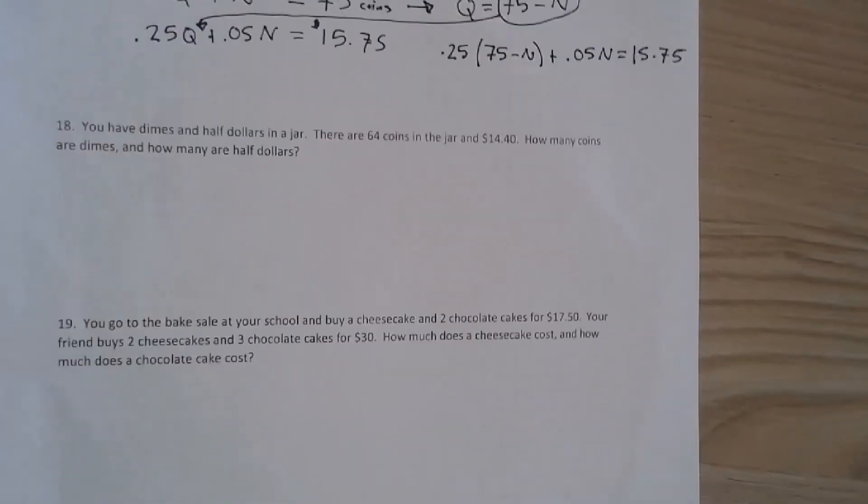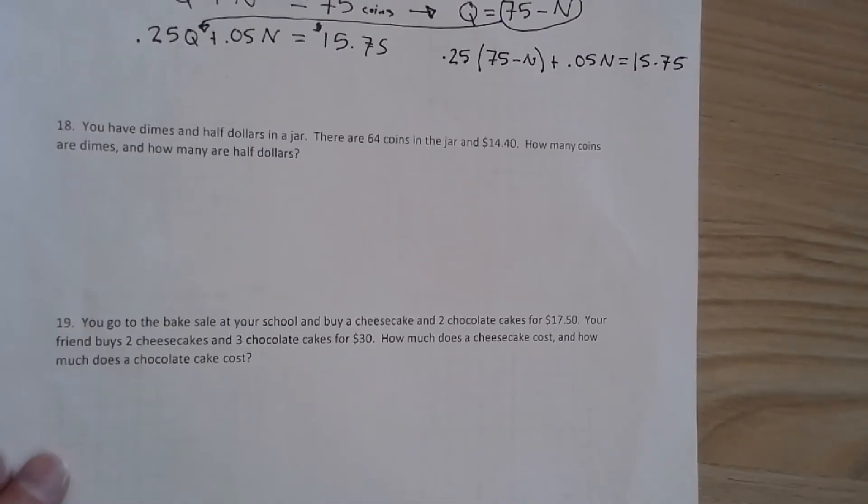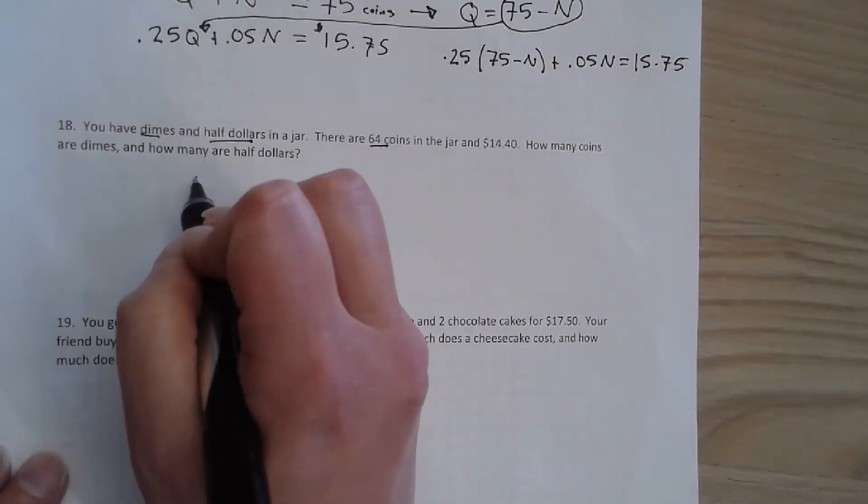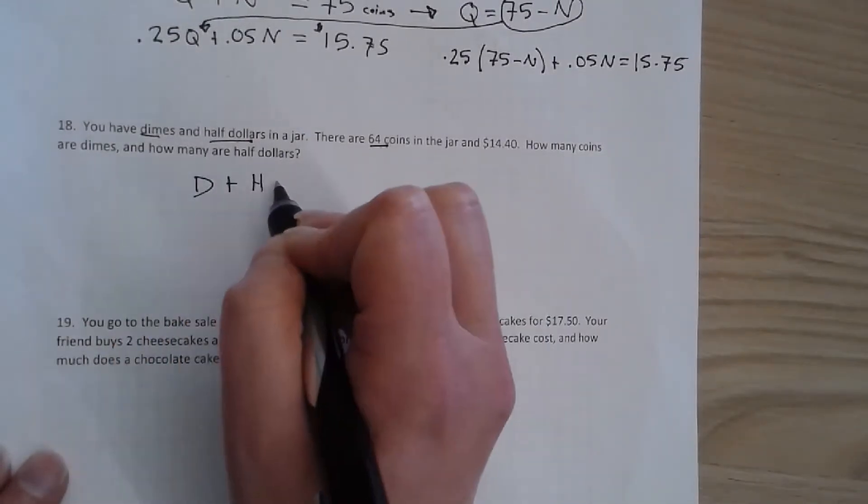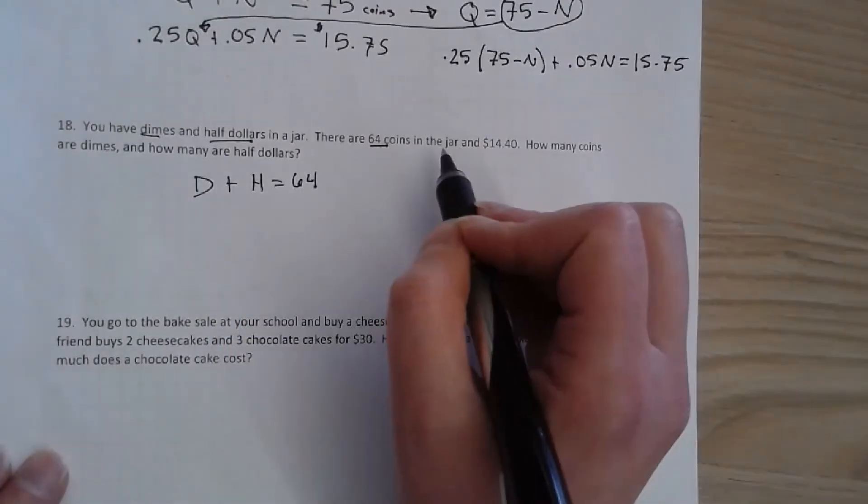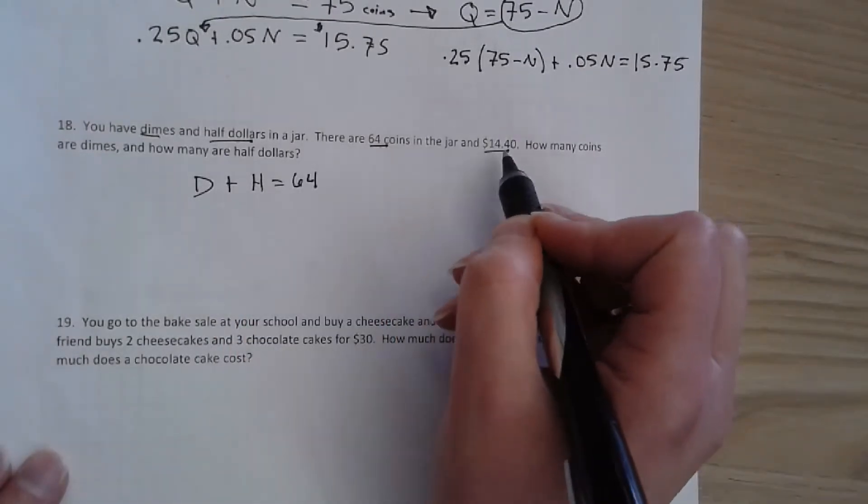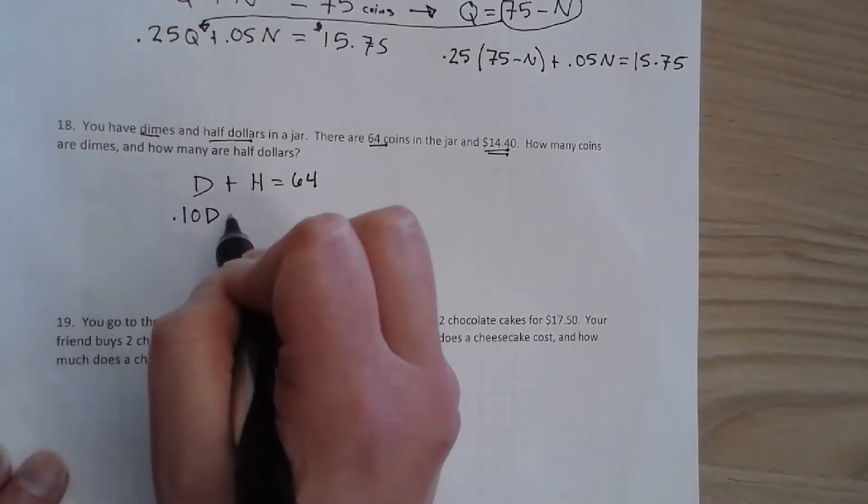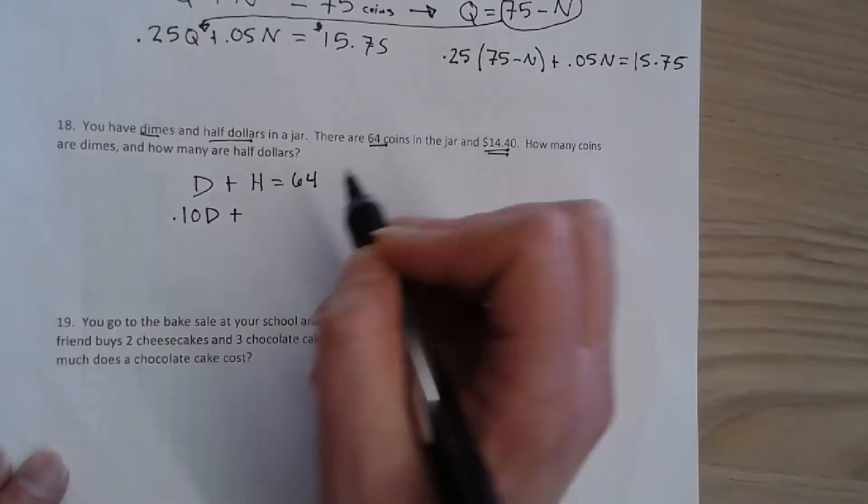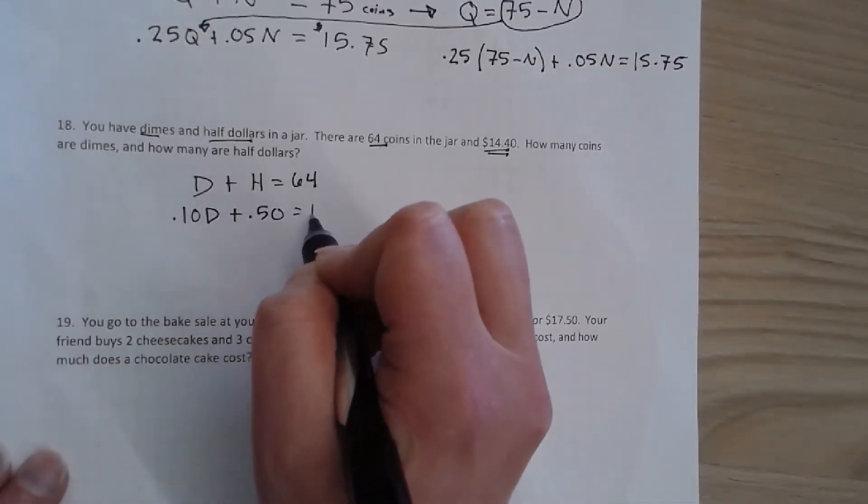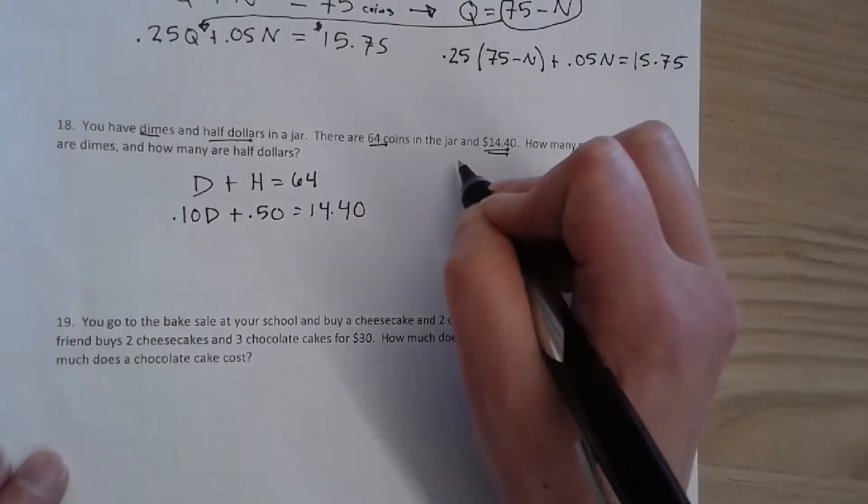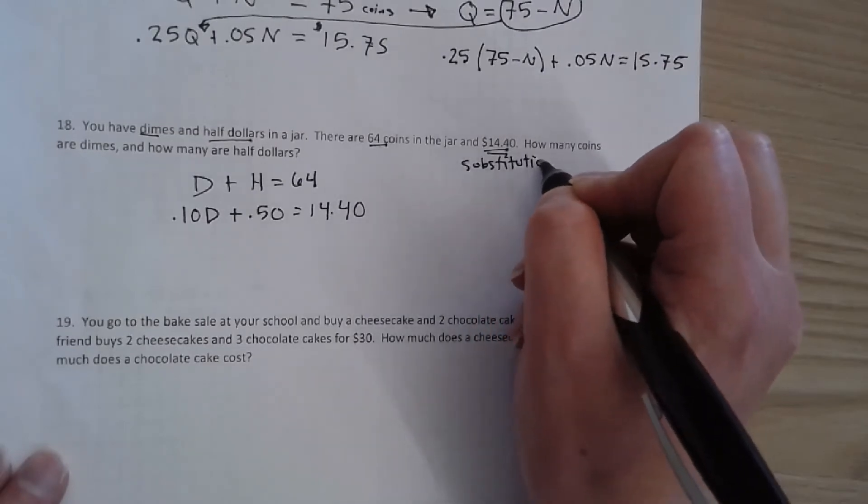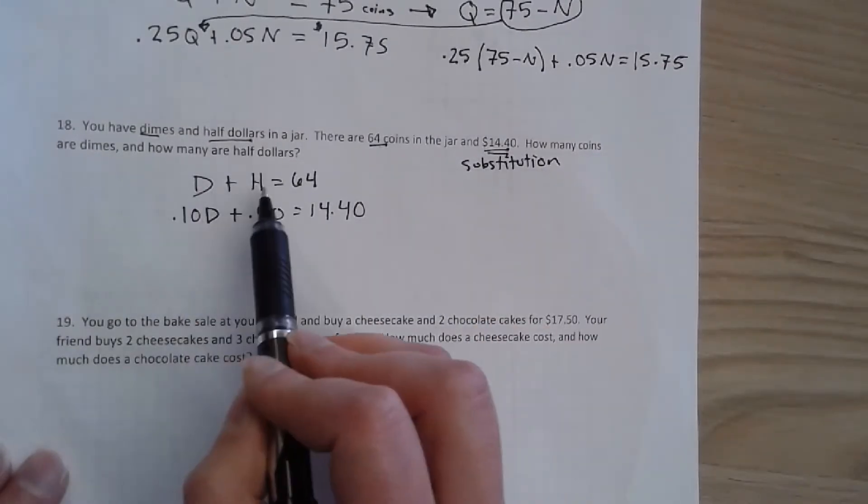On 18, I'll let you finish that. On 18 it's very similar. This time though we have dimes and half dollars with 64 coins. So dimes plus H for half dollars equals 64 coins. In the jar this time I have 14 dollars and 40 cents. So again dimes are 10 cents plus half dollars, 50 cents, is going to equal 14.40. And I would use substitution again for my method and either solve for D or H and plug it in.